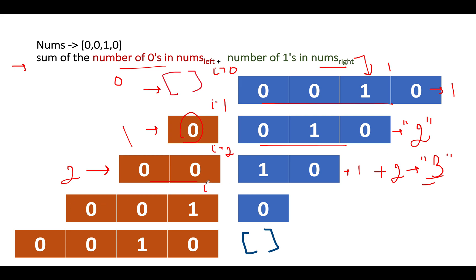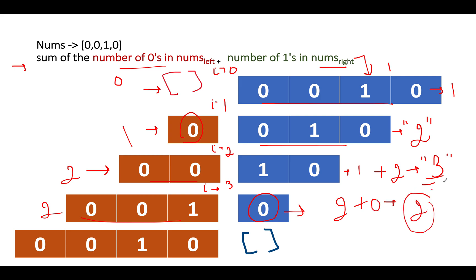For the next configuration at i equals 3, the left sub-array has [0, 0, 1] and the right has [0]. The number of zeros in the left is 2 and the number of ones in the right is 0. So 2 plus 0 gives a score of 2, which is lower than the previously calculated maximum of 3.